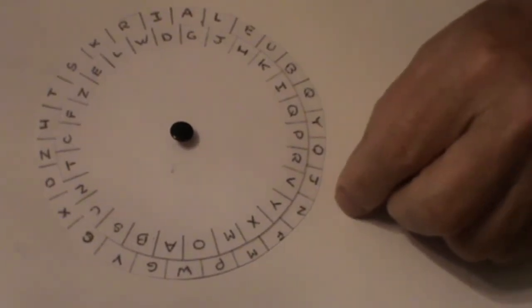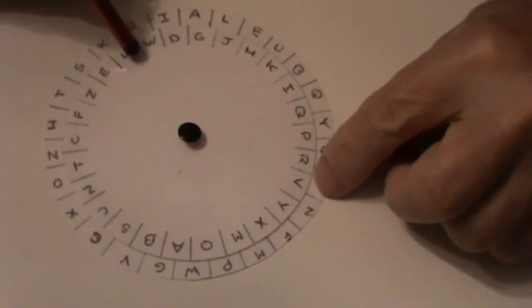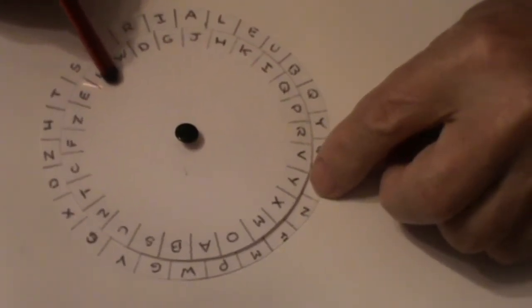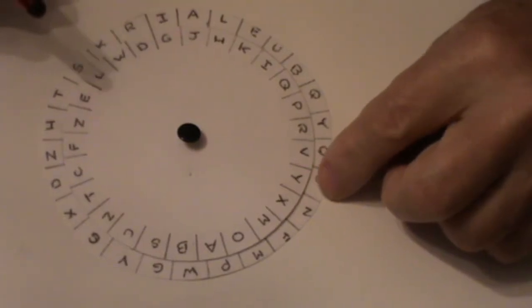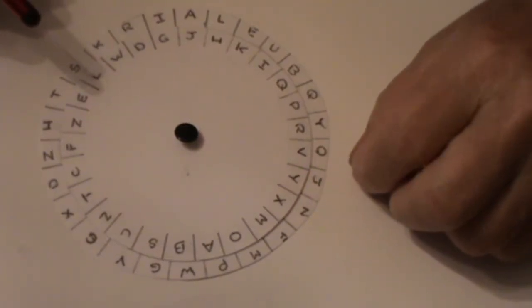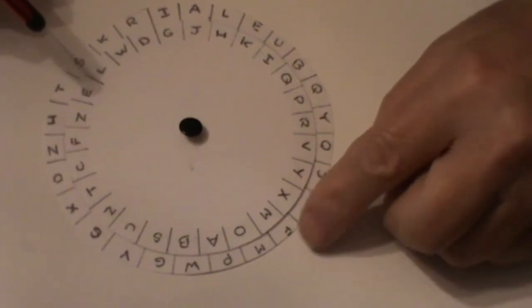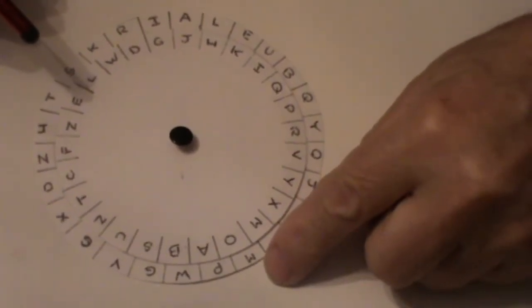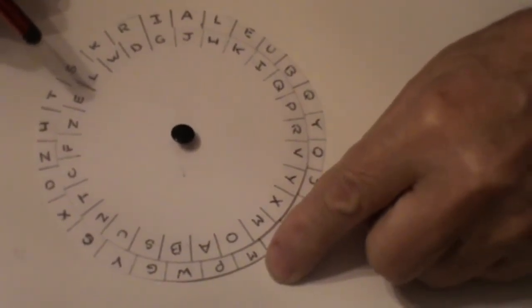The first thing to do is to align E with K so rotate the inner disc until E and K are lined up. If the message is going to be making, on the outer ring we'll look for M which gives us O as the first letter.